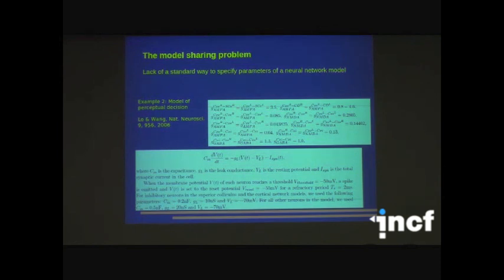Second example, this is a paper by me and John Wang. This is a model for perceptual decision, and we specify our network connection in an ugly form, and again, also the neuron parameters in free-form text. I have to take this opportunity to say sorry for everyone who ever read my papers and tried to implement it. I know how difficult it is.